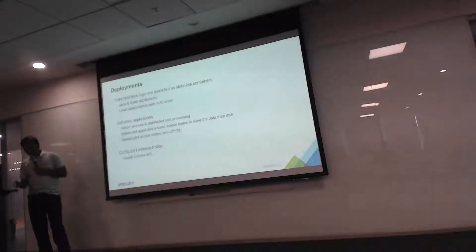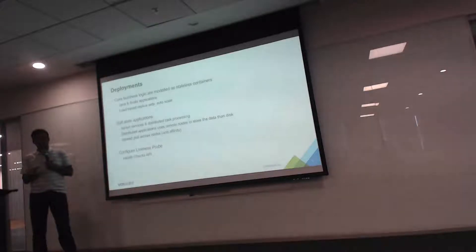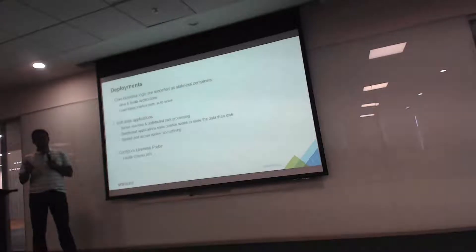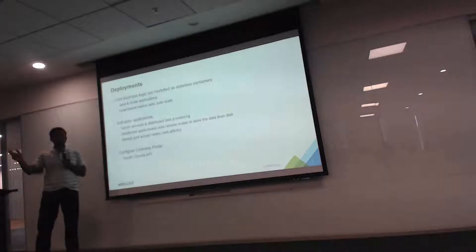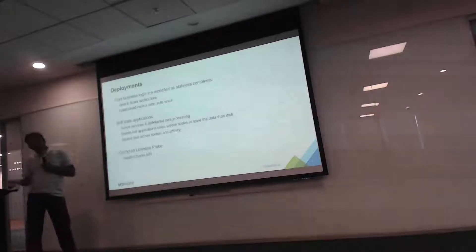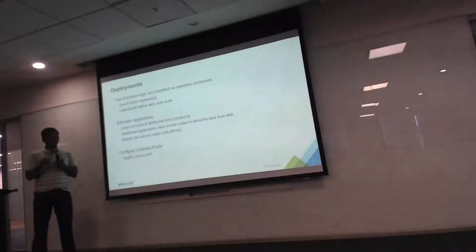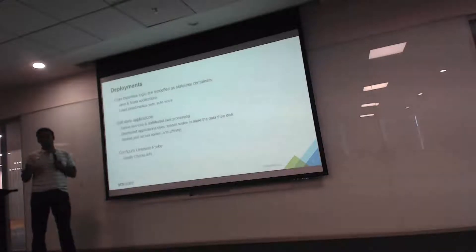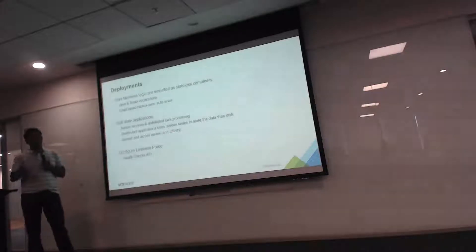A Kubernetes service works by finding all pods with specific labels — say, app equals radius — and mapping those pods to the service, doing round-robin load balancing by default. When you specify a headless service with cluster IP as none, the service does not get an IP for that FQDN. Instead, it returns all qualifying pod IPs — a simple lookup gives you all of them.